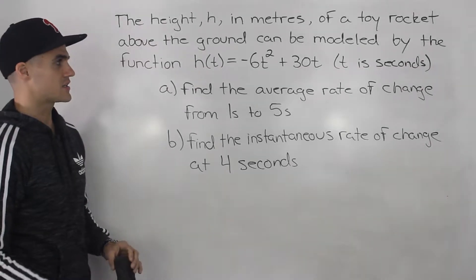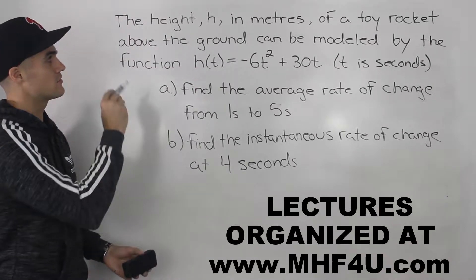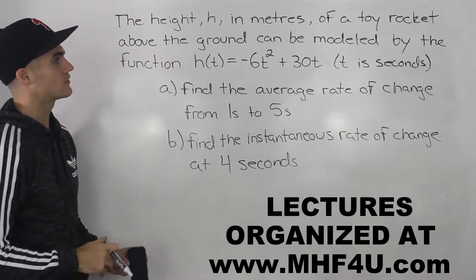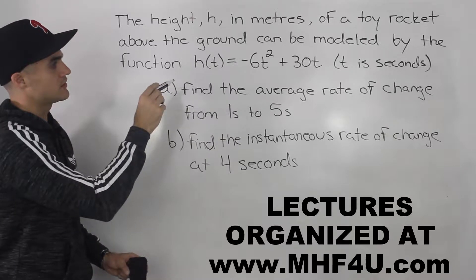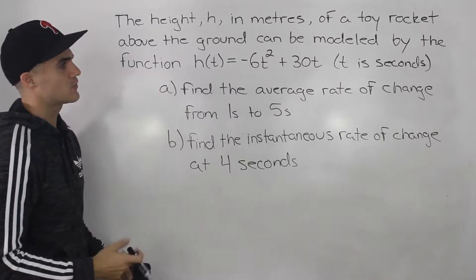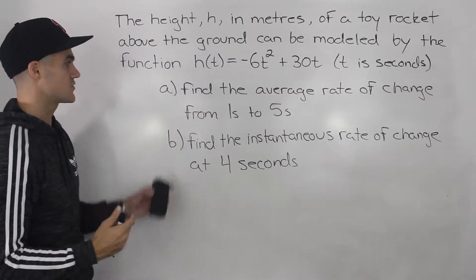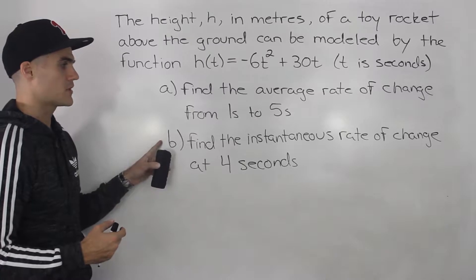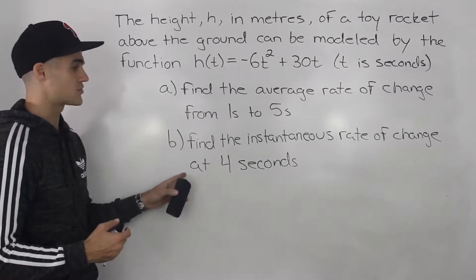Moving on to the next question. This is going to deal with rate of change and polynomials. The height h in meters of a toy rocket above the ground can be modeled by h(t) = -6t² + 30t, where t is in seconds. There are two parts: part A asks for the average rate of change from one second to five seconds, and part B asks for the instantaneous rate of change at four seconds.